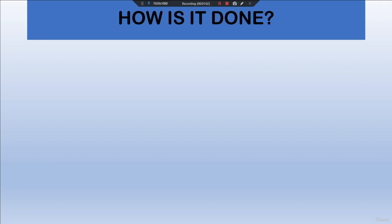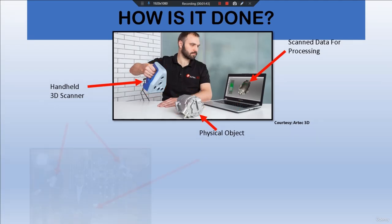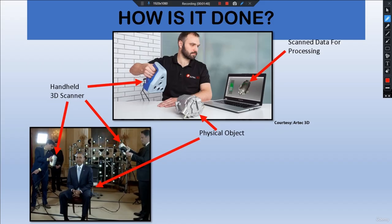Now let's see how the scanning is done. Here we observe a gentleman holding a handheld 3D scanner which he uses to scan a physical part. After being fully scanned, this gives us the scanned data. This person will then perform some post-processing operations to clean the scanned data or STL file, which will then be exported so we can start designing on it.